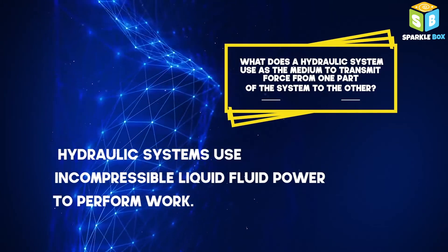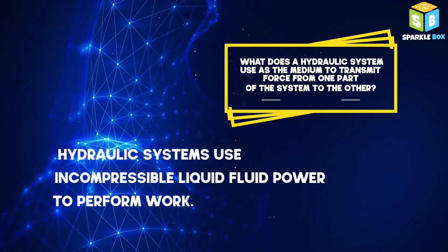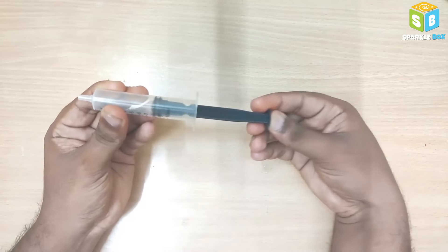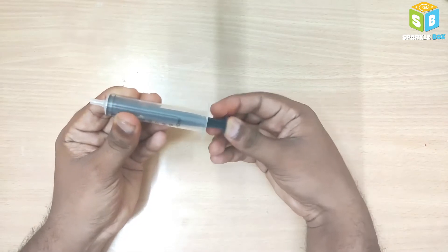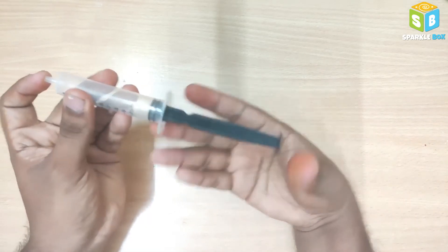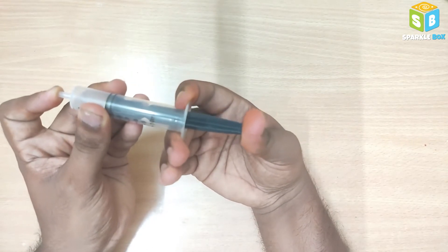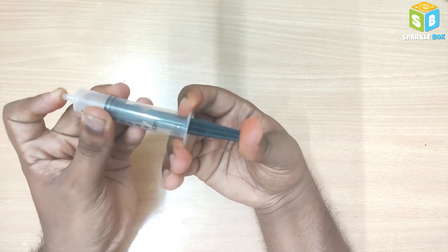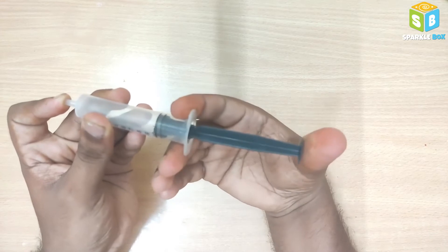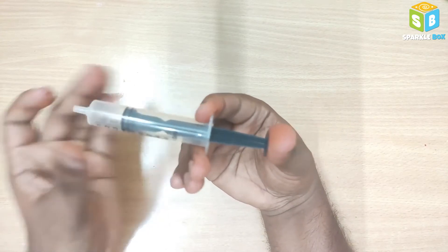So, what is an incompressible fluid? Let's do a simple activity to understand. When I pull the plunger, the syringe is filled with air. When I apply force on the plunger, the air comes out of the syringe. If I put my finger at the end, I can still push the plunger even though I am keeping my finger at the end, because the air is getting compressed. You can tell it is getting compressed because the plunger bounces back.